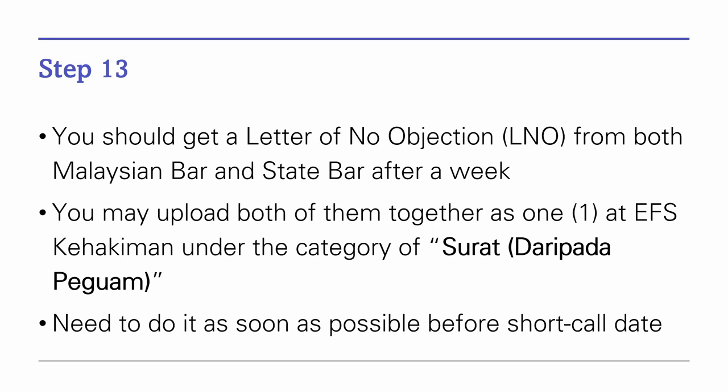Step 13: After uploading your Affidavit Penyampaian, you should get a letter of no objection from both the Malaysian Bar and the State Bar after about a week. File both of them separately at EFS Kahakiman under the category of 'Surat Daripada Badan'. You need to do this as soon as possible before the date of your short call.